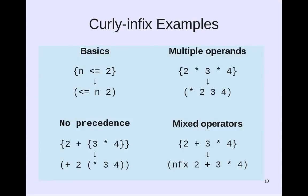Here are some examples of Curly Infix. Curly {n <= 2} simply maps to (<= n 2). You can have multiple operands: {2 * 3 * 4} simply maps to (* 2 3 4). There's no precedence, but that's usually not a problem. You can say {2 + {3 * 4}}, and this maps in the obvious way. You can use mixed operators — this will insert an nfx symbol to the front, and then you can define nfx to do whatever you want it to do.